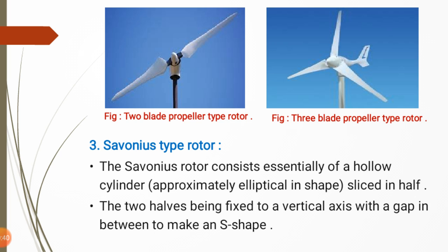This is the propeller type rotor. We can use a 2-blade or 3-blade propeller type rotor. The left-hand figure shows the 2-blade propeller type rotor and the right-hand figure shows the 3-blade propeller type rotor.